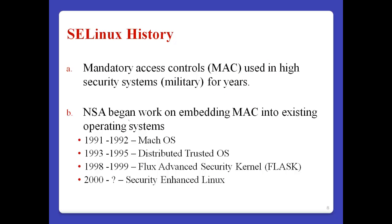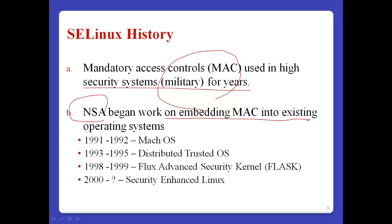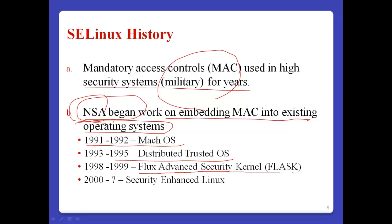In Linux history, mandatory access control has been used in high security systems, for example military organizations, for years. NSA developed SELinux. NSA began to work on embedding MAC into existing operating systems. At first the Linux kernel did not support SELinux, but in the middle of Linux system history, NSA developed the SELinux system — notably ASOS around 1990-1992, MachOS, Distributed Trusted OS in 1995, and Flux Advanced Security Kernels in 1999. NSA then renamed it Security Enhanced Linux in the year 2000.